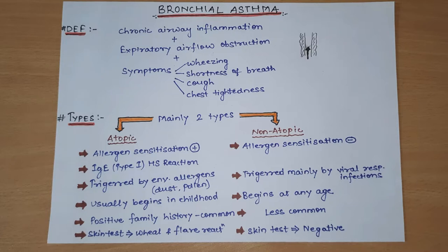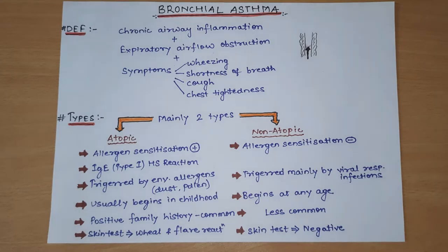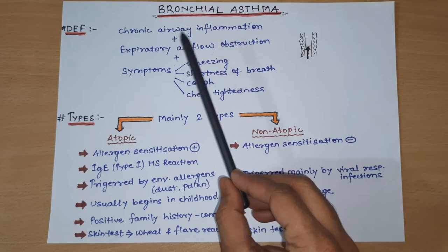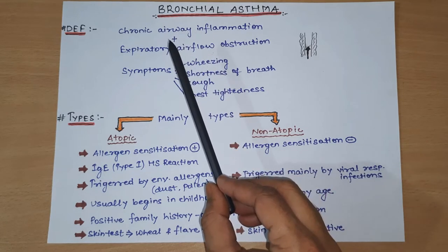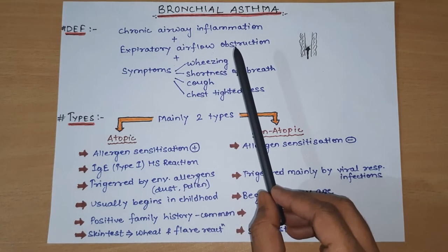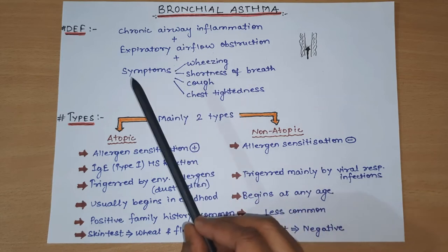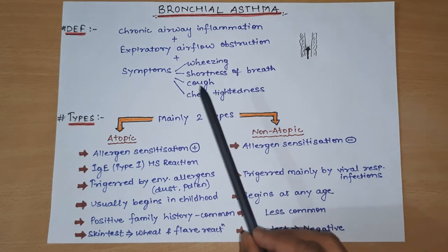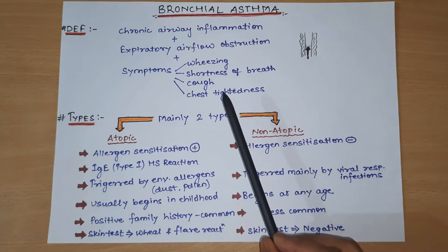The topic we will be discussing in this video is Bronchial Asthma. First, we will discuss the definition of Bronchial Asthma. Bronchial Asthma is defined as chronic airway inflammation which is associated with expiratory airflow obstruction and characterized by symptoms such as wheezing, shortness of breath, cough, and chest tightness.